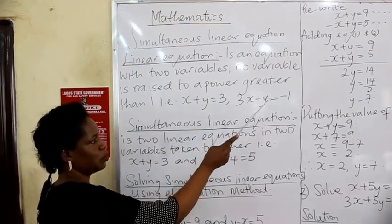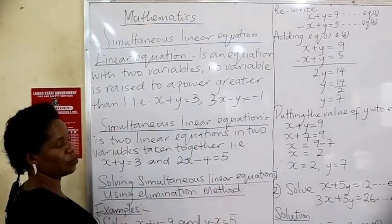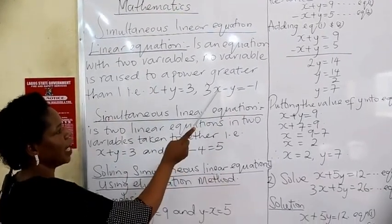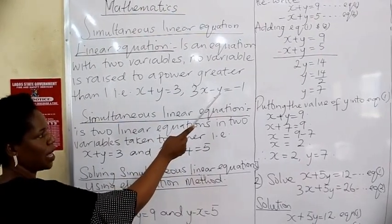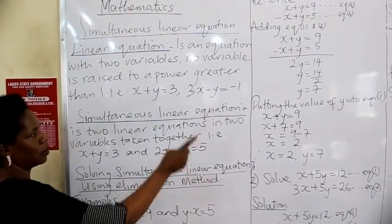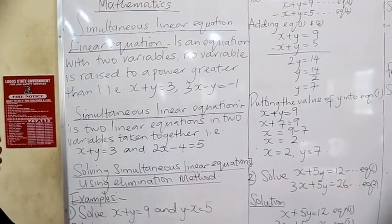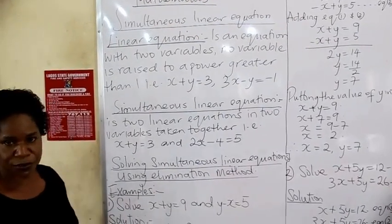Another example: 3x minus 1 equal to negative 1. The power of x here is raised to power 1 while the power of y is also raised to power 1. Because of that, we call it a linear equation.